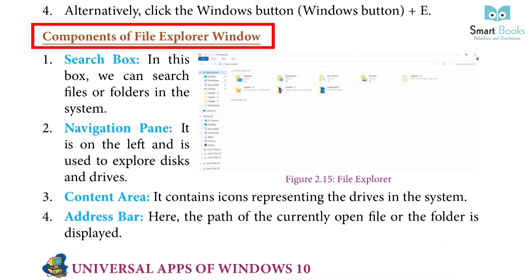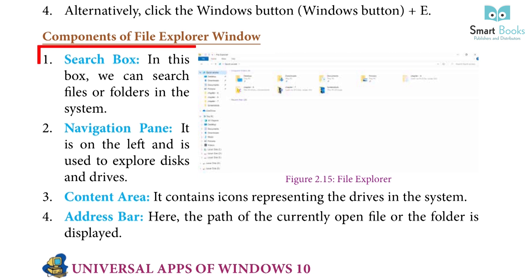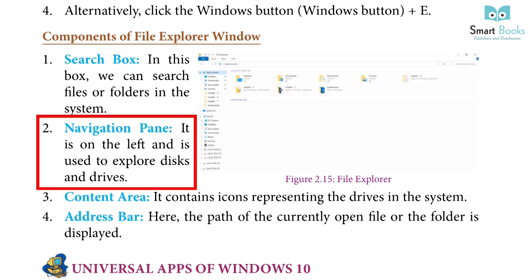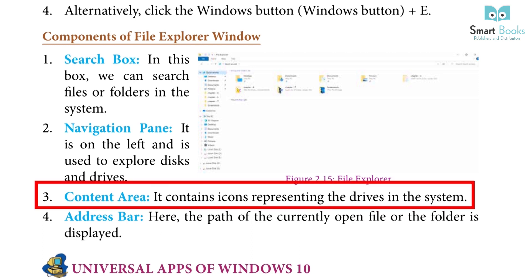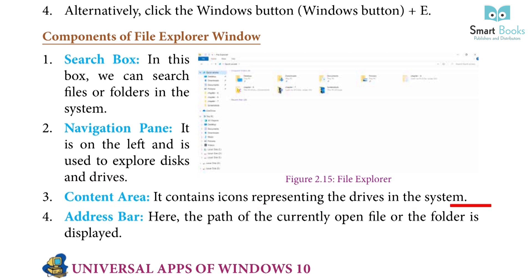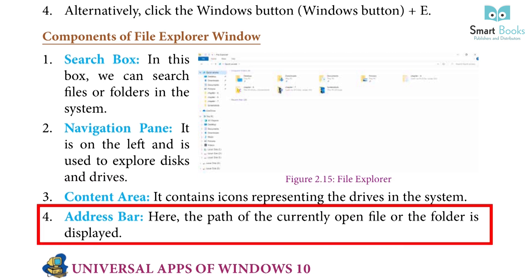Components of the File Explorer window: 1. Search box — In this box, we can search files or folders in the system. 2. Navigation pane — It is on the left and is used to explore disks and drives. 3. Content area — It contains icons representing the drives in the system. 4. Address bar — Here the path of the currently opened file or folder is displayed.